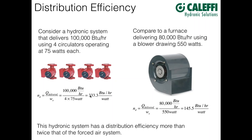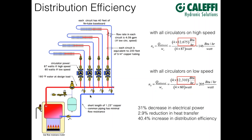Some slides started comparing multiple circulator systems and zone valve systems. A quick comparison: running four circulators on high speed at 87 watts each, where each zone delivers 12,675 BTUs per hour, gives a distribution efficiency of 146 BTUs per hour per watt. If we switch those circulators down to low speed at 60 watts each, notice that our heat transfer goes down a little bit — and that's a key consideration.